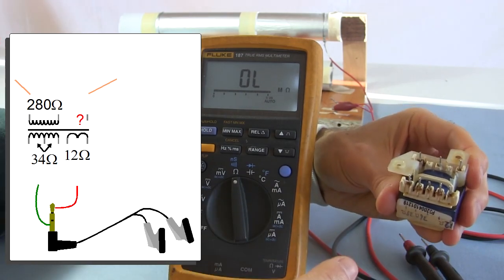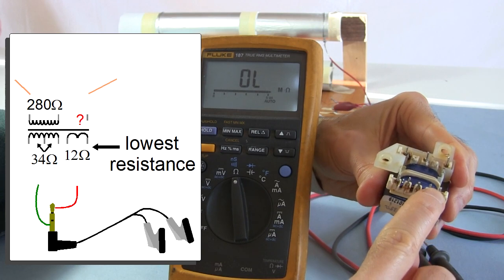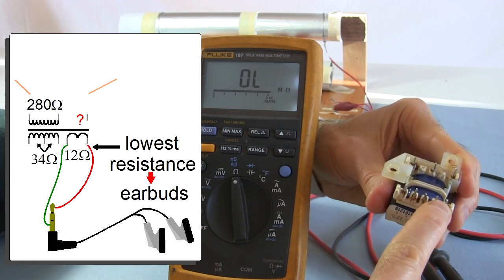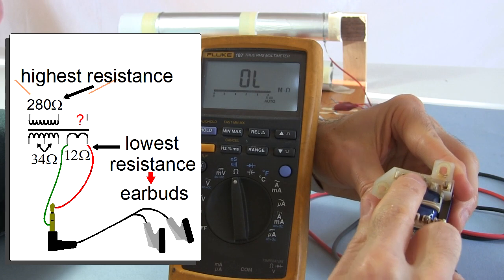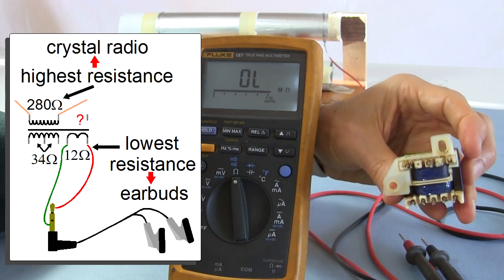And what I find that works best is if I take the lowest resistance coil, which is these two, the 12 ohms, and I connect that to the earbud side, and then take the highest resistance coil, this 280 ohm one, connect that to the crystal radio side, and that gives me the best sound.